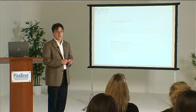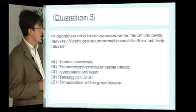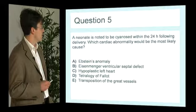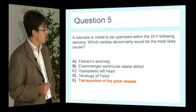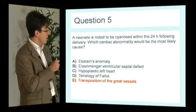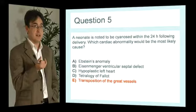Question five: a neonate is noted to be cyanosed within 24 hours following delivery. Which cardiac abnormality would most likely cause this? If you answered E, transposition of the great vessels, you'd be correct. Without the 24-hour time window, the most common condition on this list would be tetralogy of Fallot, but that typically only presents six to nine months after birth. At birth, we are looking at transposition of the great vessels, whereby the aorta and pulmonary arteries are connected to the wrong side of the heart.